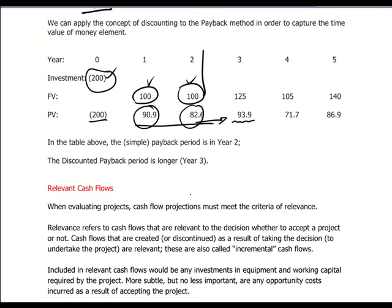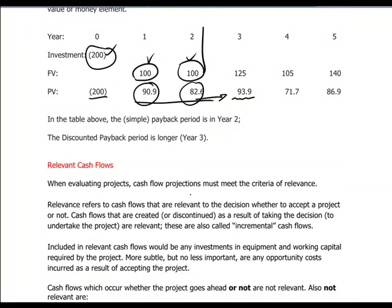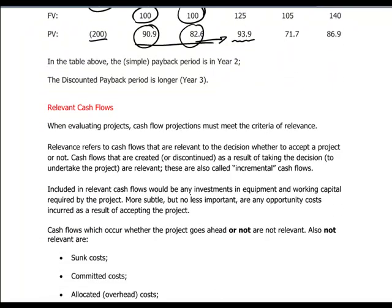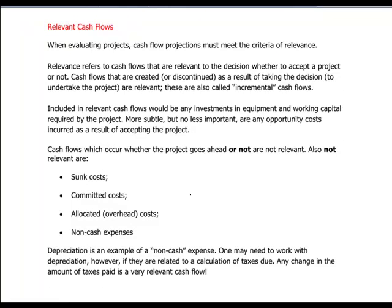For investment appraisal there are a number of things we must take into account. To determine whether a project is worth doing we need to identify relevant cash flows — those that make a difference to the outcome. Cash flows which occur whether or not the project goes ahead are not relevant. Examples include sunk costs, committed costs, and costs allocated from elsewhere in the company. Non-cash expenses are also excluded, for the different reason that they are simply not cash flows.